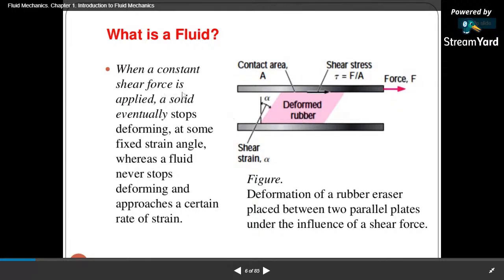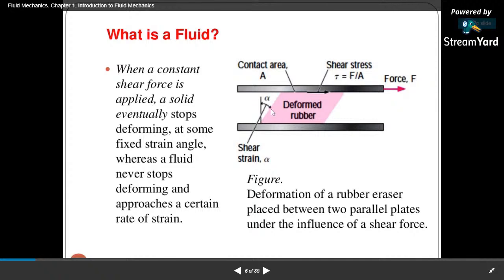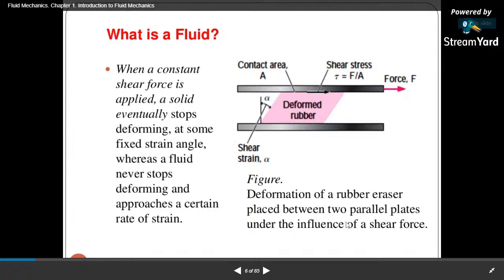In solids, when a constant shear force is applied, the solid eventually stops deforming at some fixed strain angle. It will deform but not continuously deform, and within a fixed strain angle it stops. But in case of fluid, the body starts continuously deforming and approaches a certain rate of strain, and at a certain strain rate it continues to move.